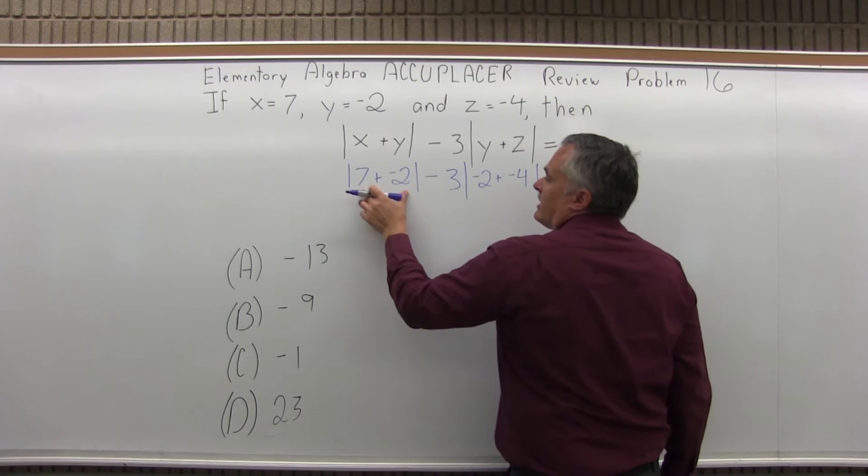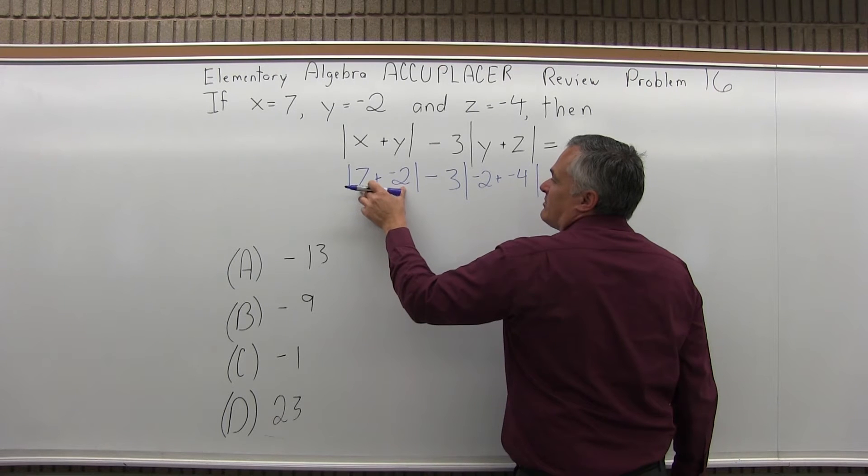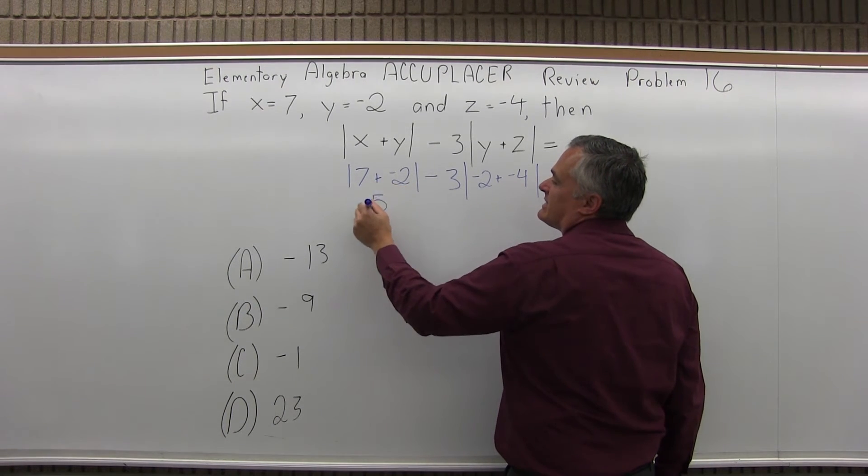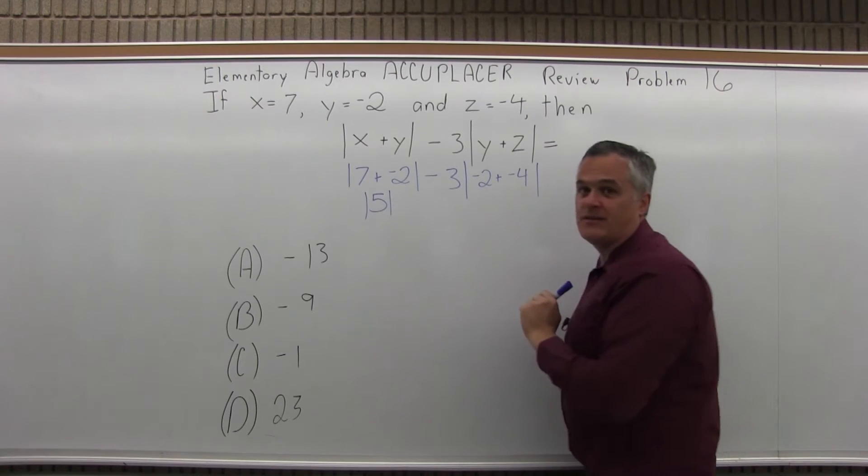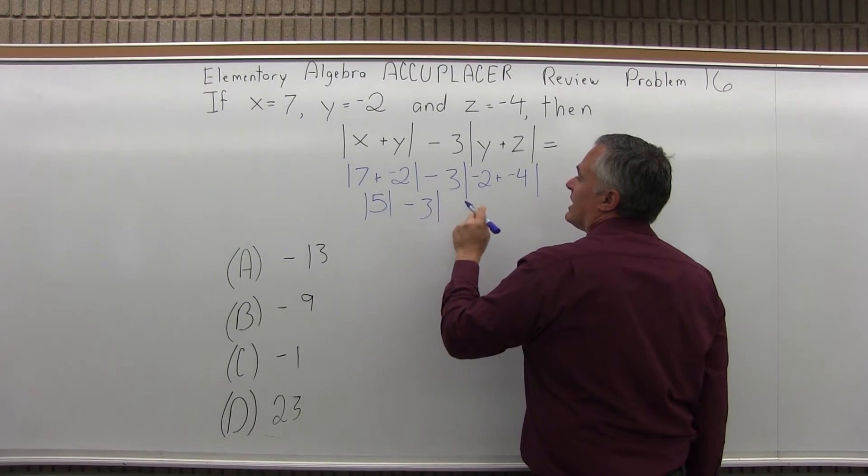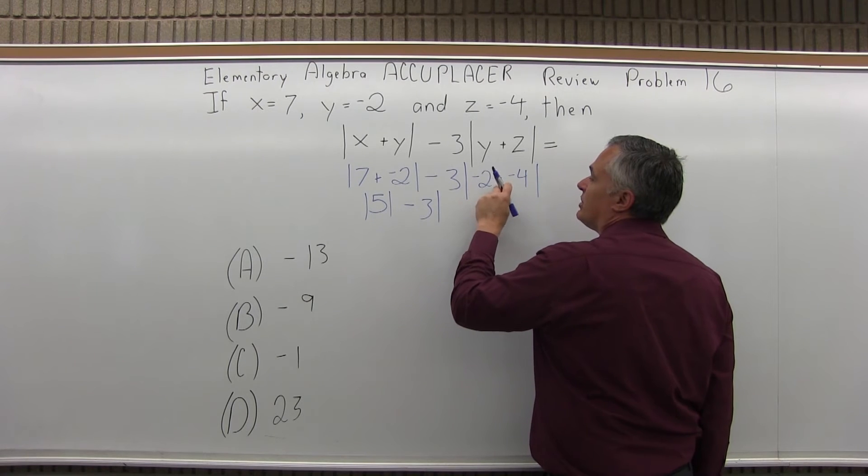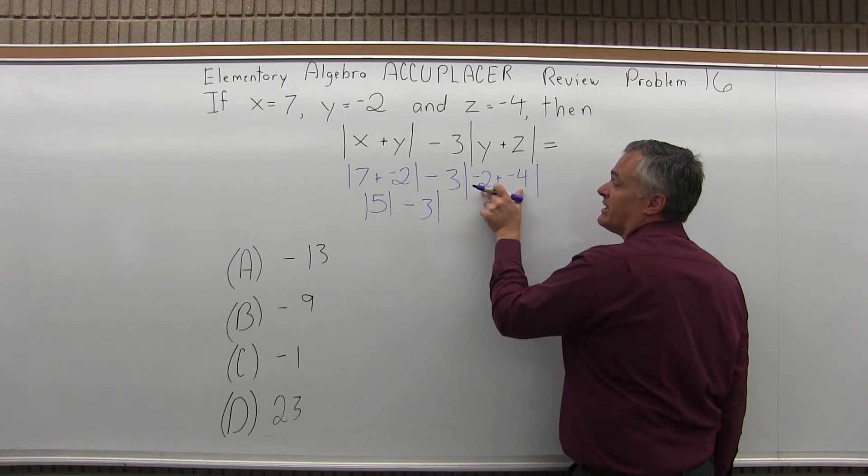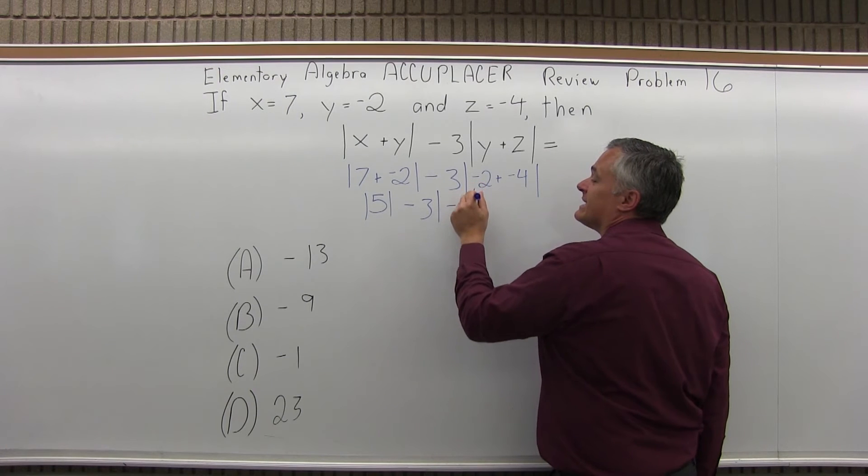Now the first absolute value, 7 plus a negative 2 is really 7 minus 2, so that's absolute value of positive 5. And then minus 3 times absolute value of negative 2 plus a negative 4. While they're both negative, it's going to be negative 6.